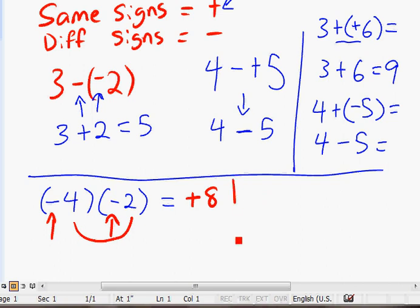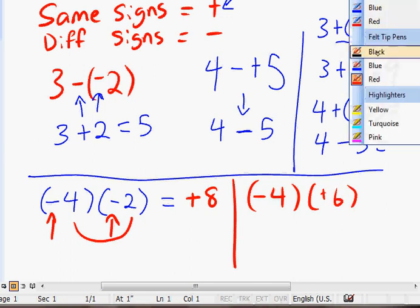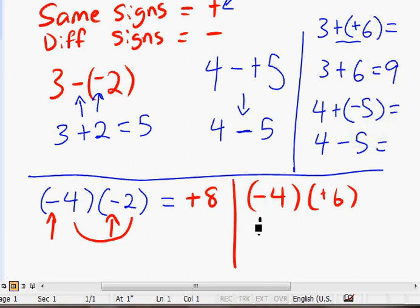Now, let's do another one. Negative 4 times a positive 6. In this case over here, you can see that there's a negative and a positive, because they're different signs, the answer is going to be negative. And it's just 4 times 6, 24 is the answer.